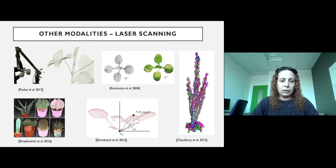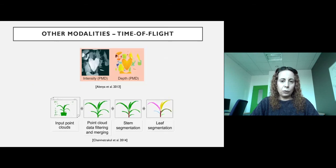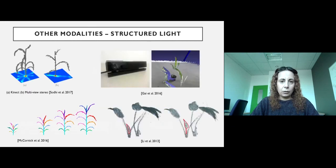There are other modalities other than RGB color images. For example, laser scanning, where you can obtain higher-resolution models, though it is more expensive than RGB cameras. Or you can have time-of-flight cameras to get depth, or use structured light systems like Kinect.